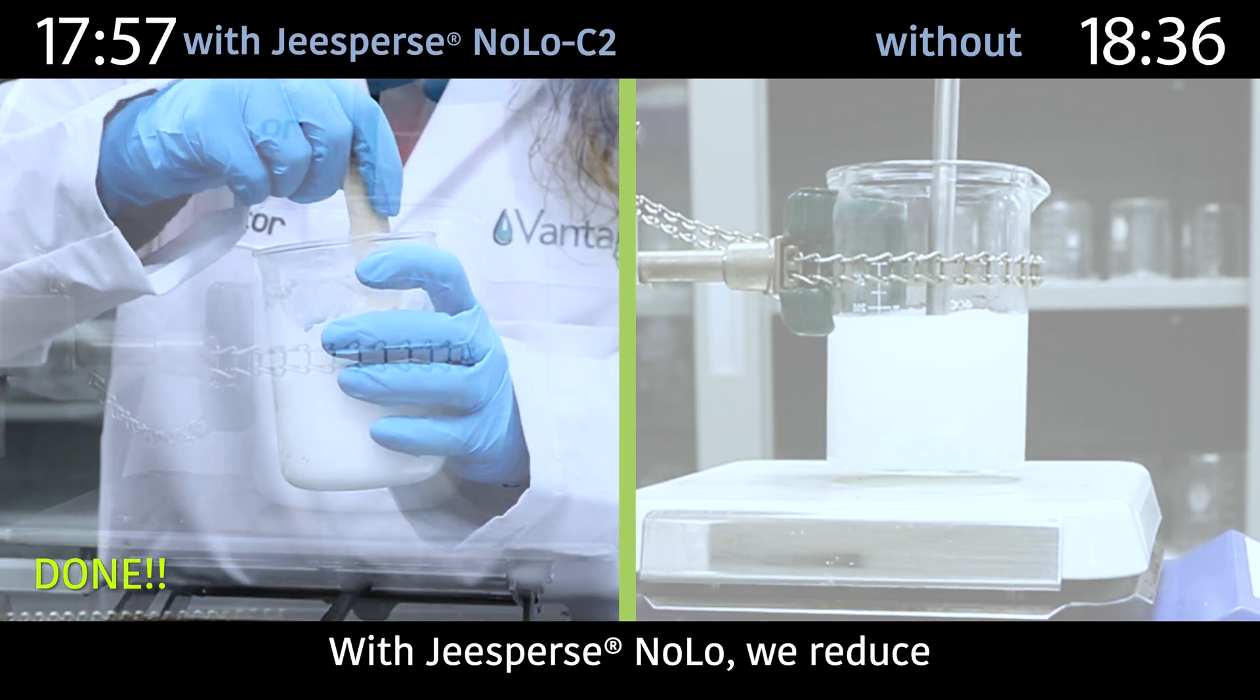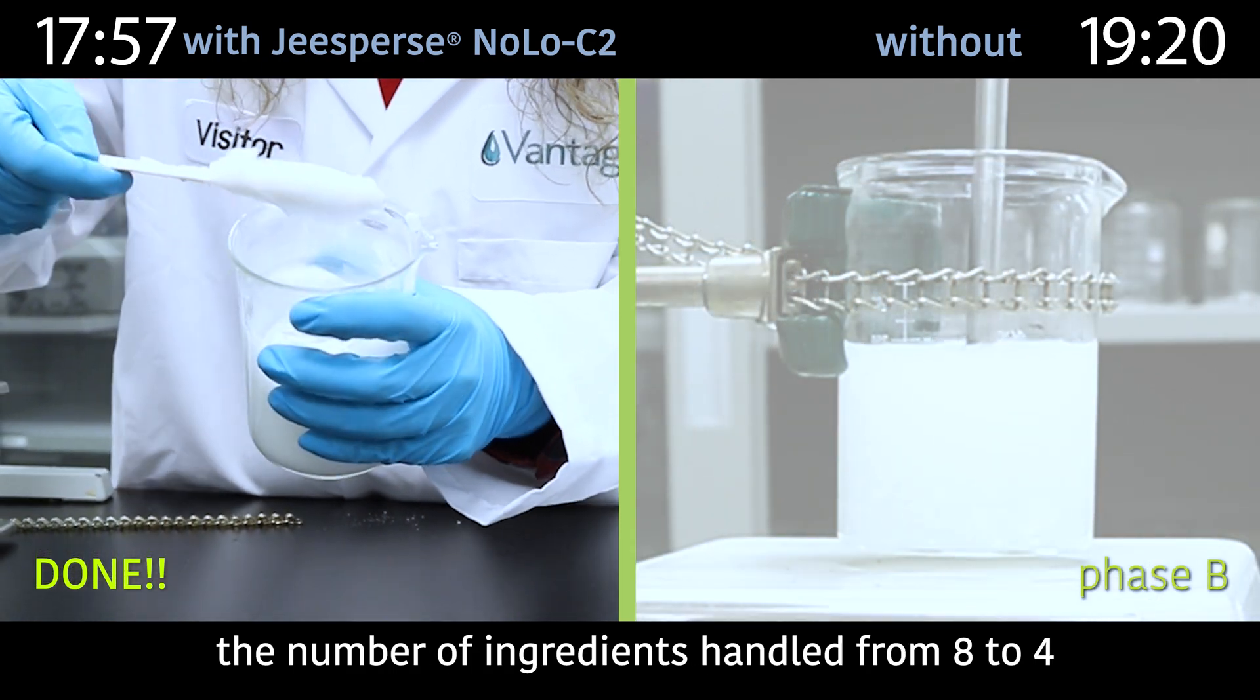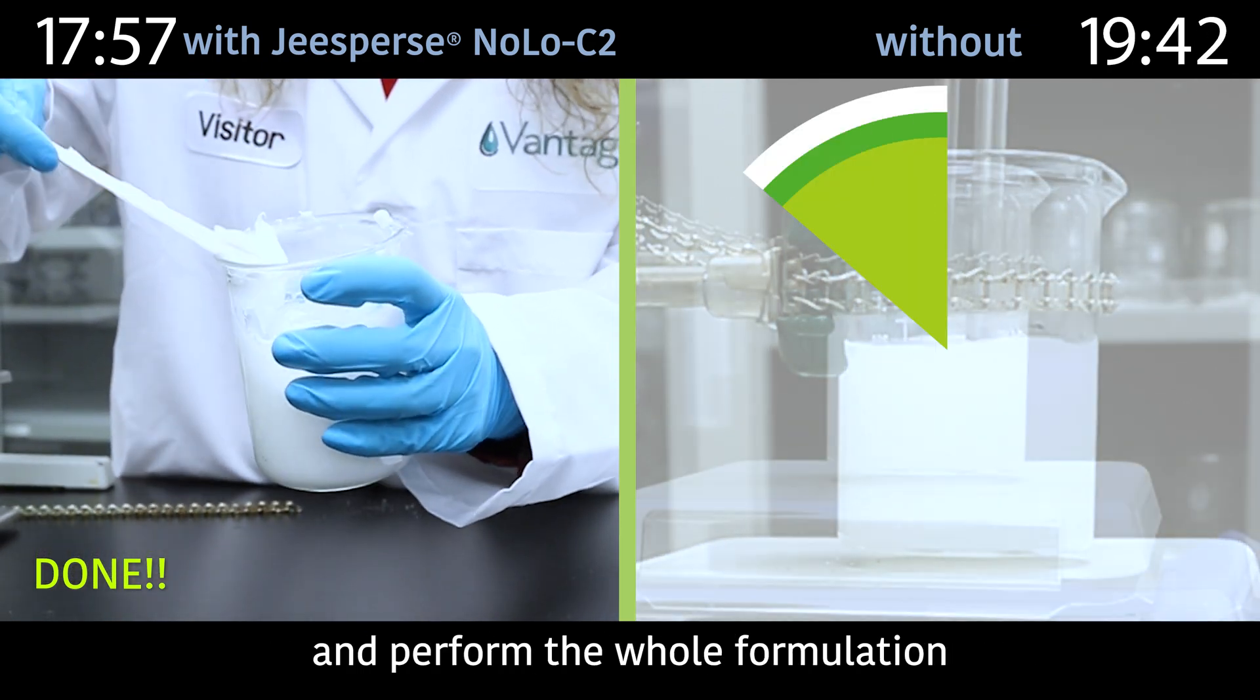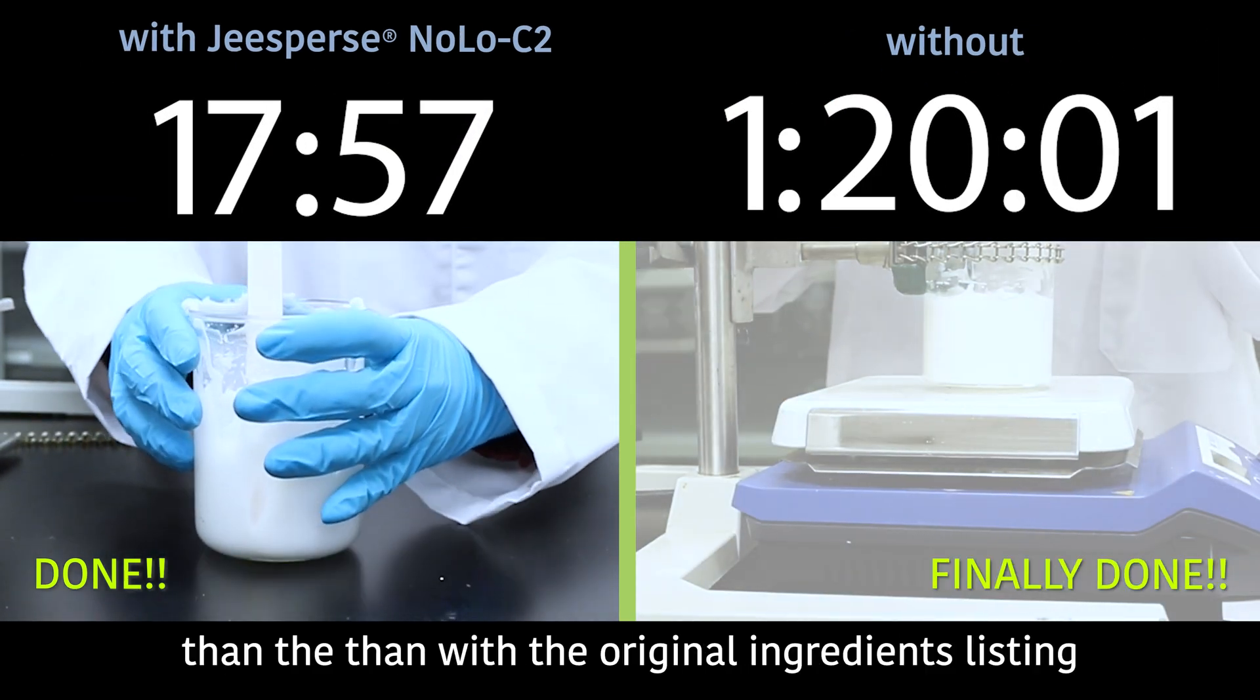With Gspur Snolo, we reduced the number of ingredients handled from 8 to 4 and performed the whole formulation nearly 6 times faster than with the original ingredient listing.